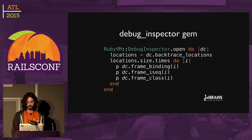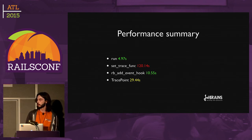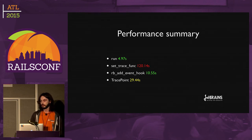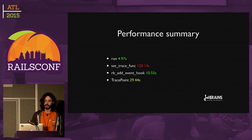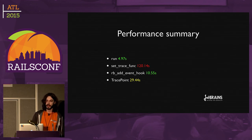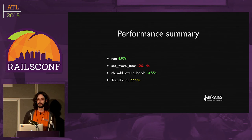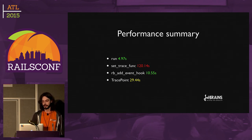Here comes a small performance summary. We get five seconds with a simple program run. set_trace_func is really, really slow — it's two minutes. rb_add_event_hook is super fast, and TracePoint is in between. It's possible to get almost the same performance with TracePoint as with the event hook when using a C block. Unfortunately, when running the debugger, we have to watch for all events, and as you've seen, a small program generates nine events per two calls, and that's a lot — and for Rails, it's even bigger.